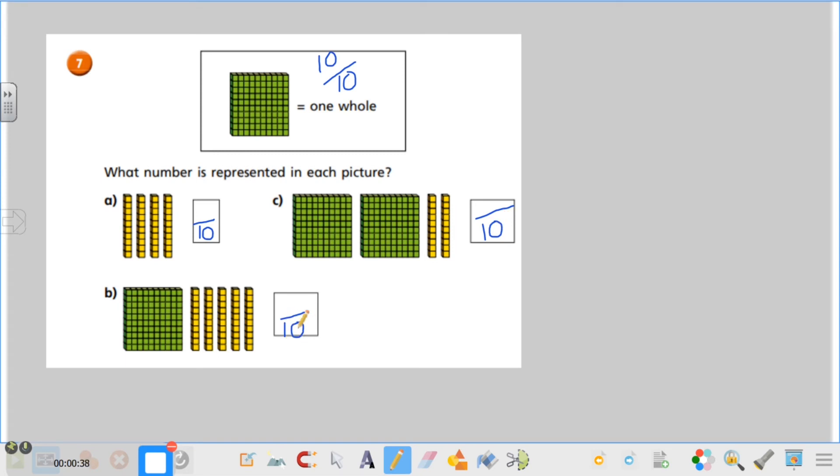How many tens do we have then? We have got 1, 2, 3, 4, four lots of 10, so that is representing 4 tenths. How many do we have here? 10, 20, 21, 22, so that's 22 tenths. And then in this one we've got 10, and these sticks are going to count as one tenth, so 10, 11, 12, 13, 14, 15, so that is 15 tenths.